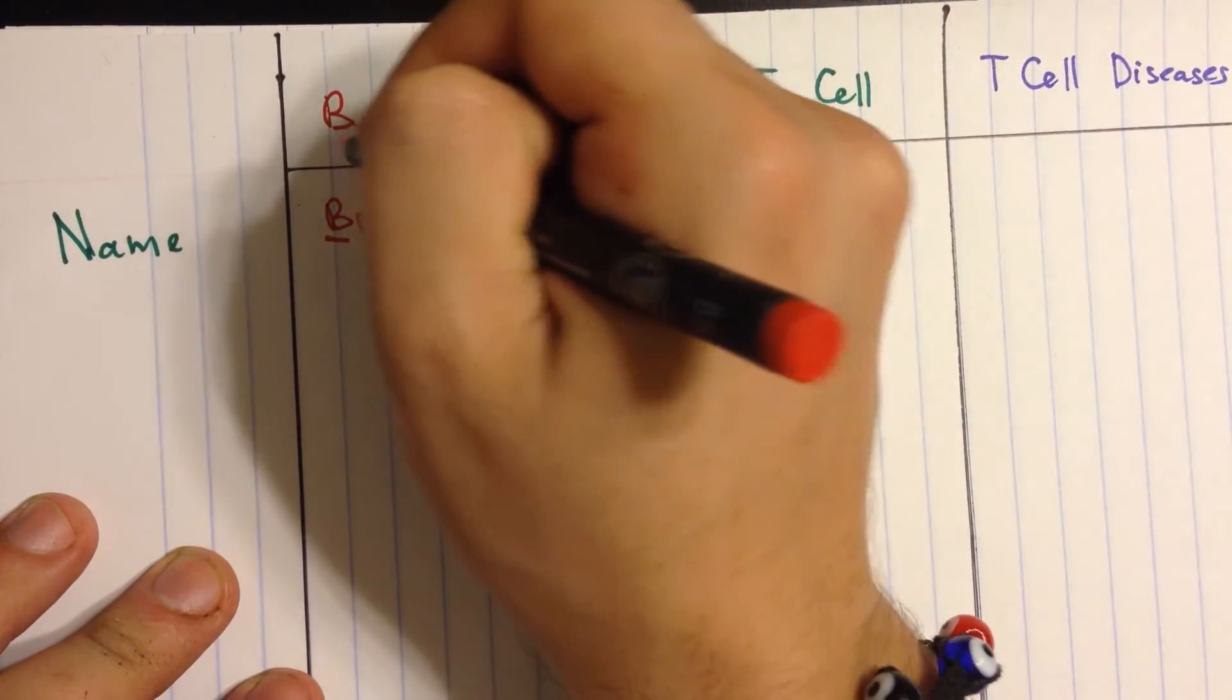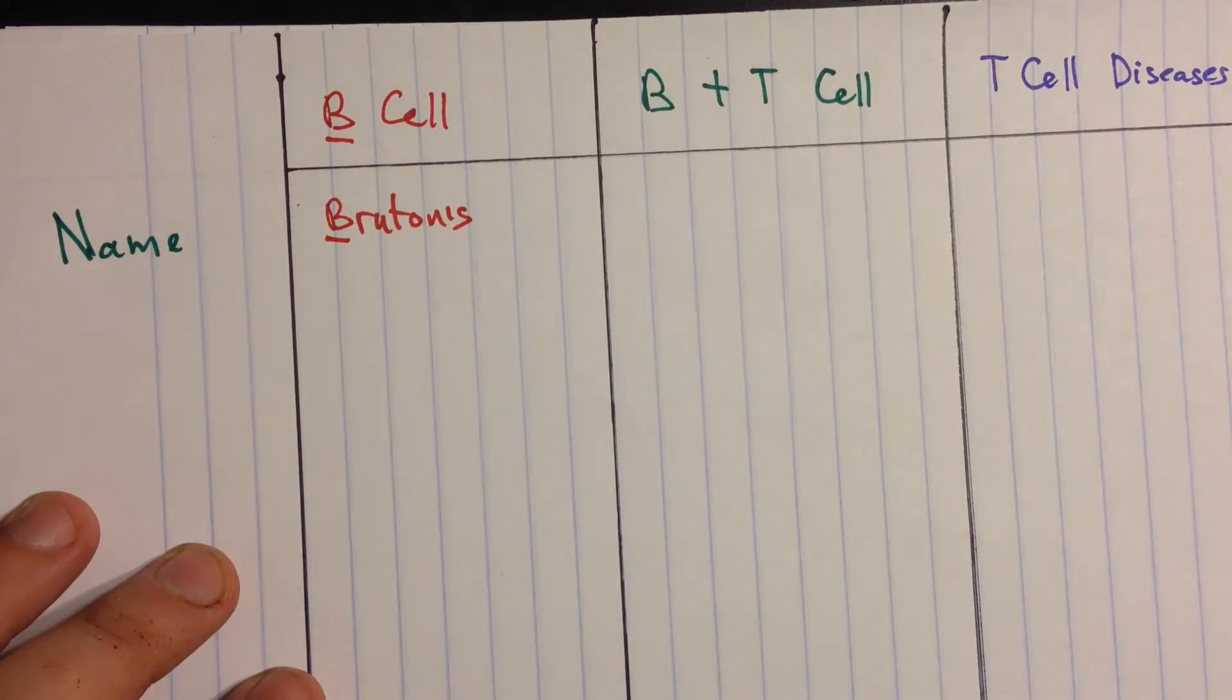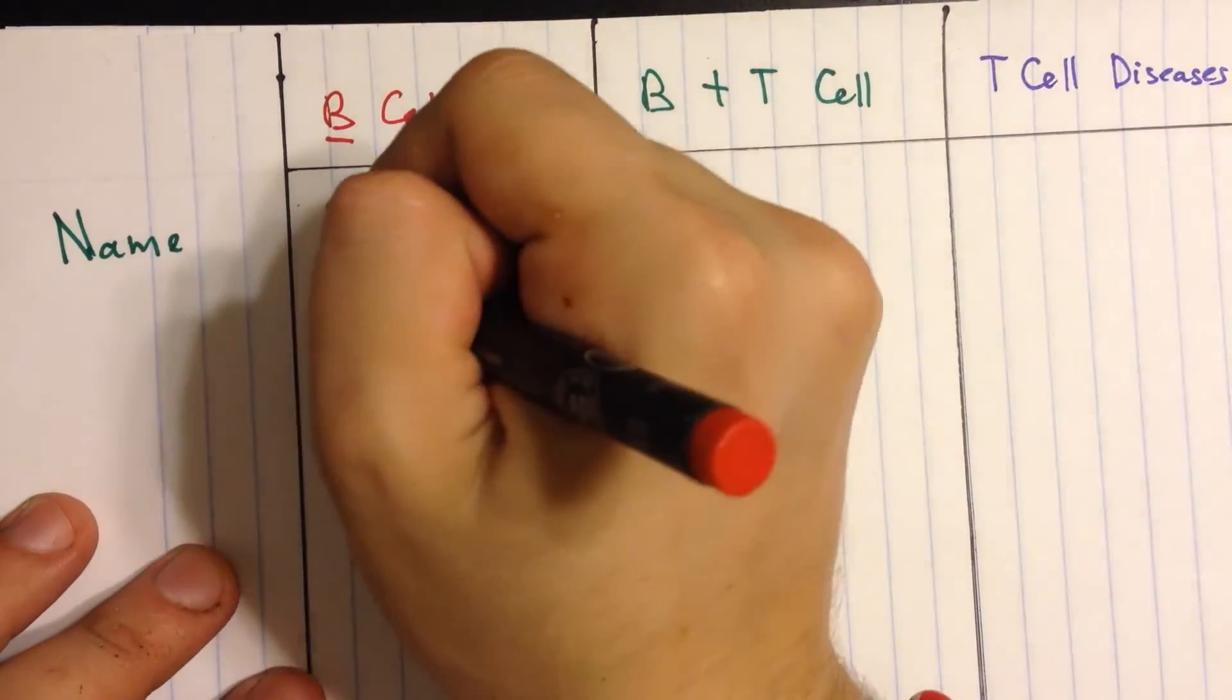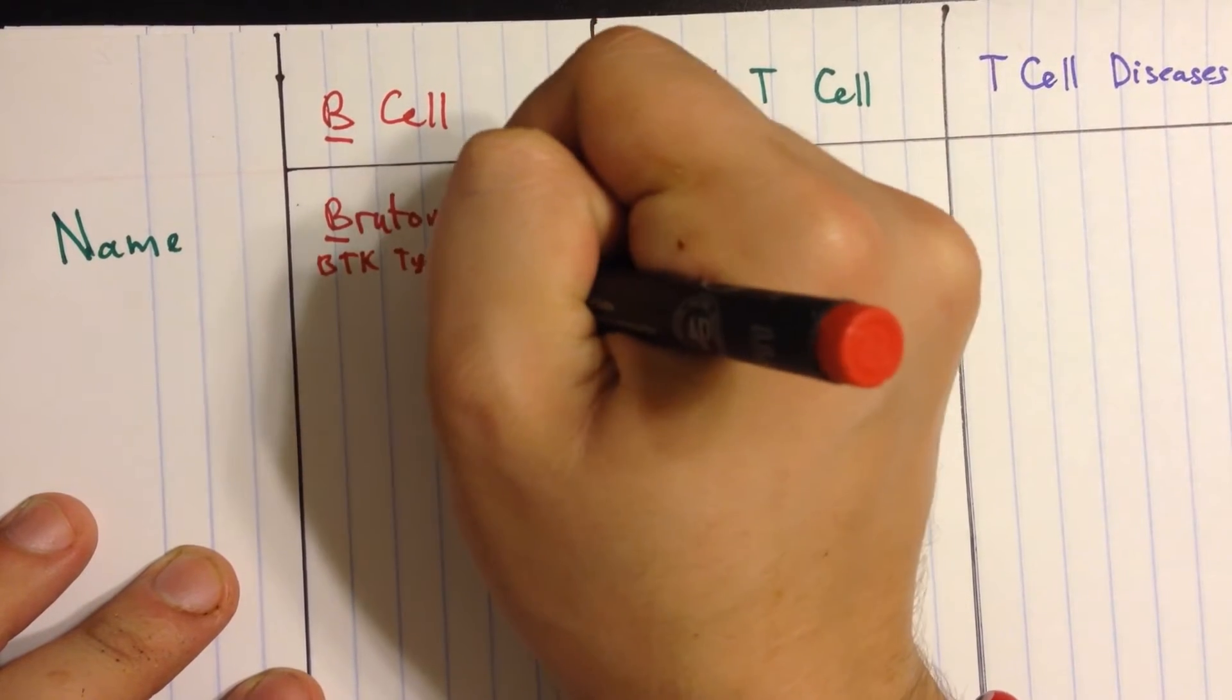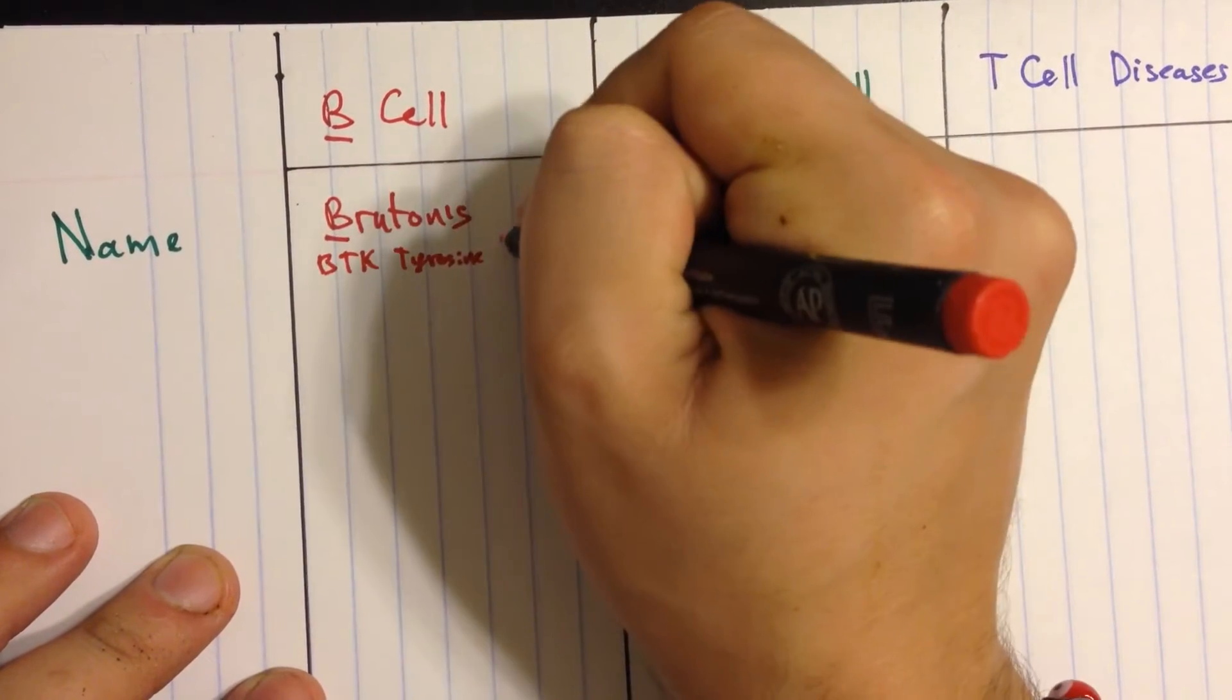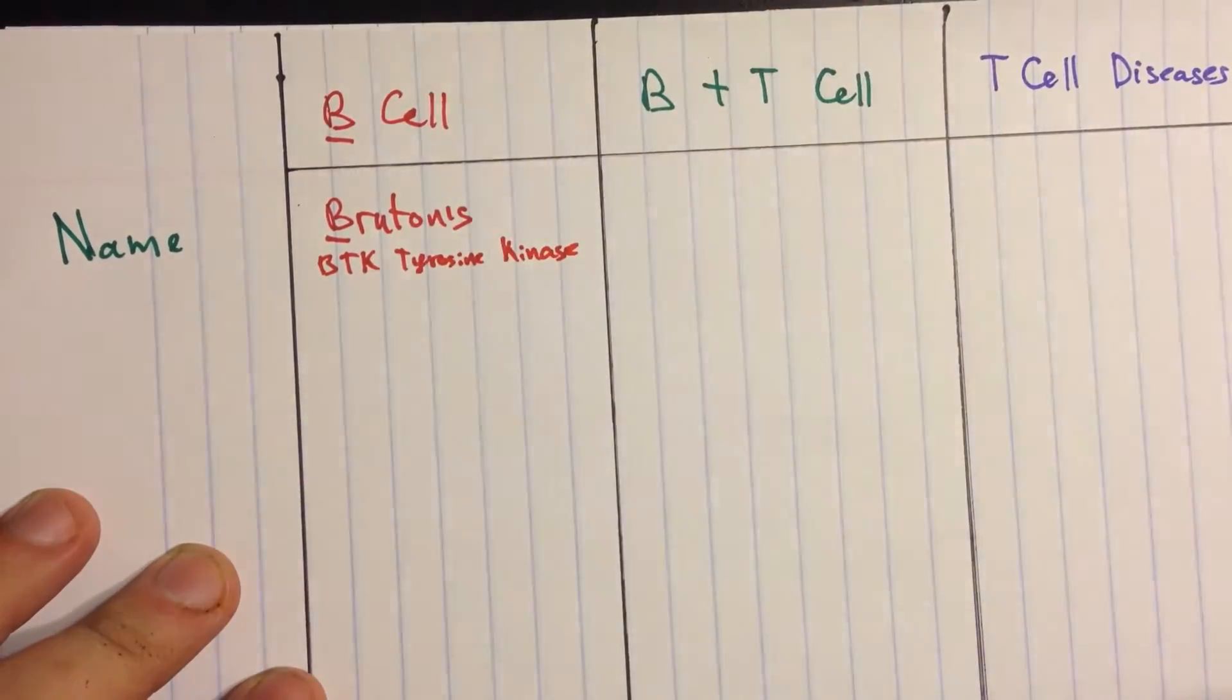See the B for B cell, Bruton's. And what happens here is you have a defective BTK tyrosine kinase. And what that does is you can't mature your B cells.